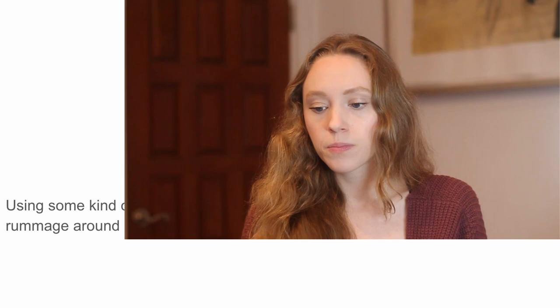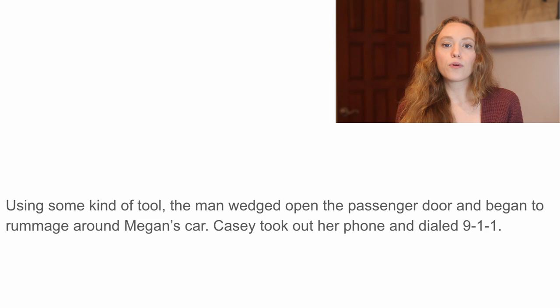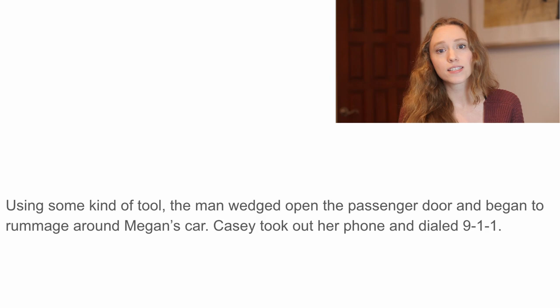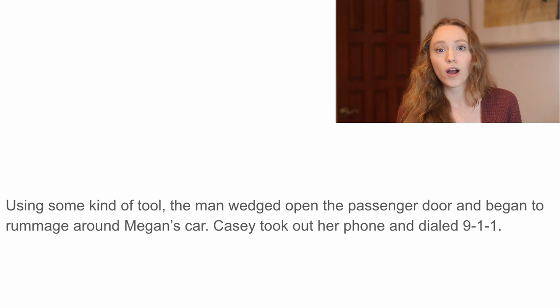Here's an example: "Using some kind of tool, the man wedged open the passenger door and began to rummage around Megan's car. Casey took out her phone and dialed 911." This paragraph goes from event to event. There's nothing grammatically incorrect, but it is missing Megan's response and reaction. When she sees someone attempting to steal something from her car, we would expect her to feel something. So you want to make sure you are adding in that reaction.